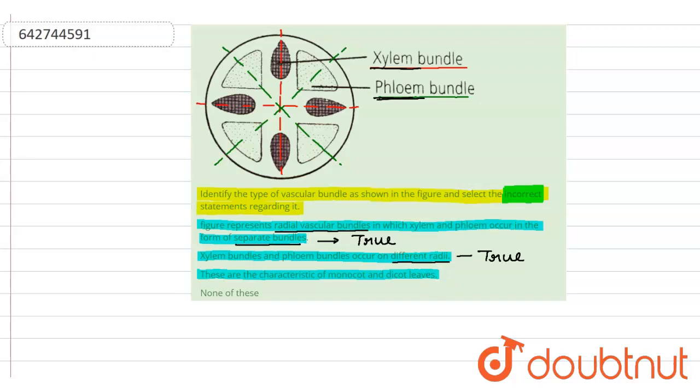These are the characteristic of monocot and dicot leaves. But here this is a wrong or false statement. The reason is this diagram is for the roots, not the characteristic of monocot and dicot leaf.